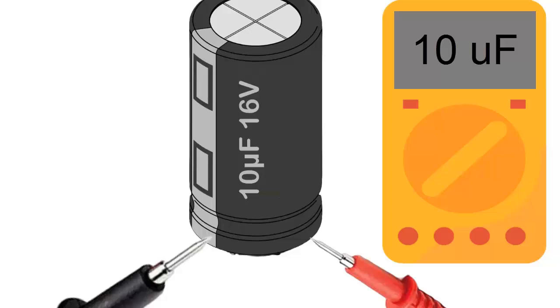If you have a capacitance meter, set it to the appropriate range. Connect the capacitance meter probes to the capacitor terminals. Read the capacitance on the display and compare it to the nominal value indicated on the capacitor.